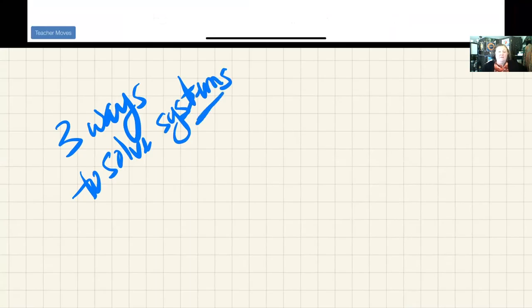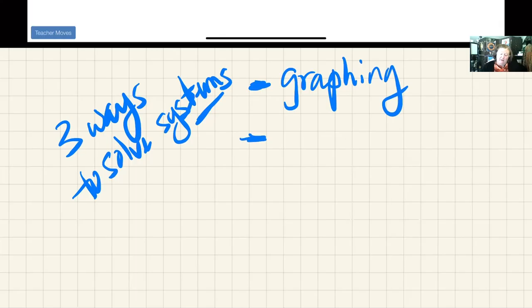So we tend to call systems of equations just systems for short. The three ways to solve them are graphing, which is, quite frankly, you just get the equations and you graph them and you find where they cross, elimination, and substitution.